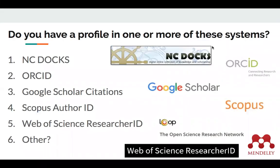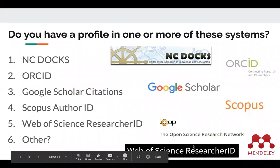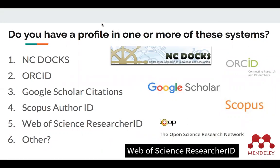A question for those here: do any of you have a profile in one or more of these systems? NC Docs, ORCID, Google Scholar Citations, Scopus Author ID, The Loop from the Open Science Research Network, Mendeley, or Web of Science Researcher ID? It sounds like we've got somebody who has at least one and somebody who doesn't, so we've got a good mix. Both Sam and I have profiles in some of these systems.